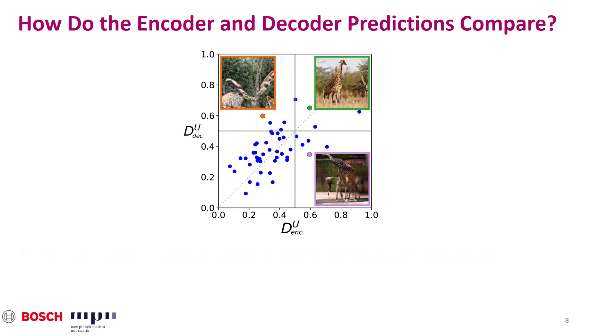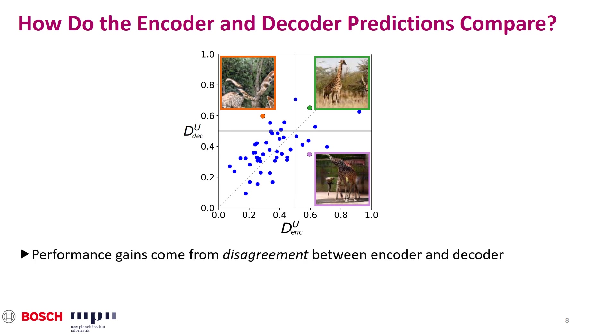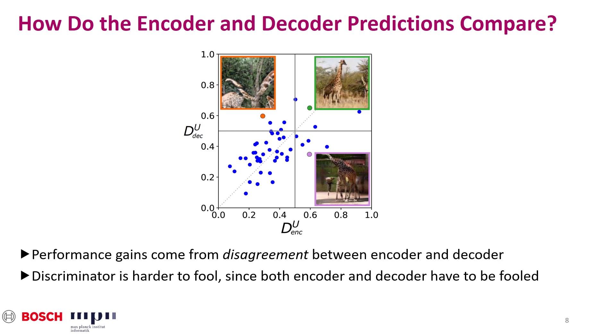The disagreement explains the performance gains, because the generator now has to satisfy different critics. This also means the discriminator is harder to convince that the fake image is real.